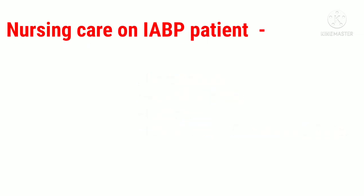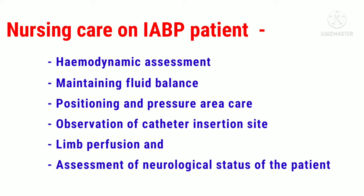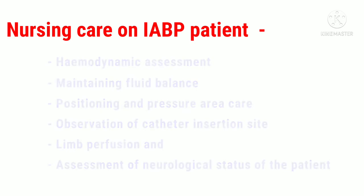Now we are going to discuss some important points on nursing care of a patient on IABP. After insertion of IABP, nursing care involves hemodynamic assessment, maintaining fluid balance, positioning and pressure area care, observation of the catheter insertion site, limb perfusion, and assessment of neurological status of the patient.